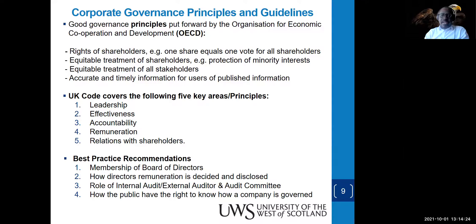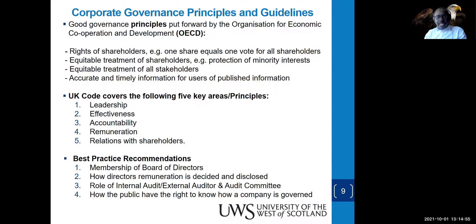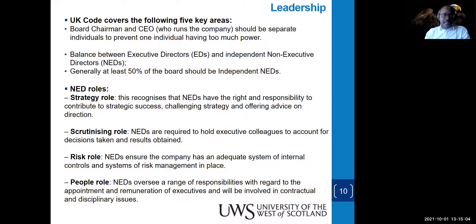Narrowing down to the UK code — it covers five key areas under its principles: leadership, effectiveness, accountability, remuneration, and relations with shareholders. The best practice recommends four items: the membership of the board, how directors' remuneration is decided and disclosed, the role of internal and external auditors and audit committees, and how the public could have the right to know how the company is governed through disclosures.